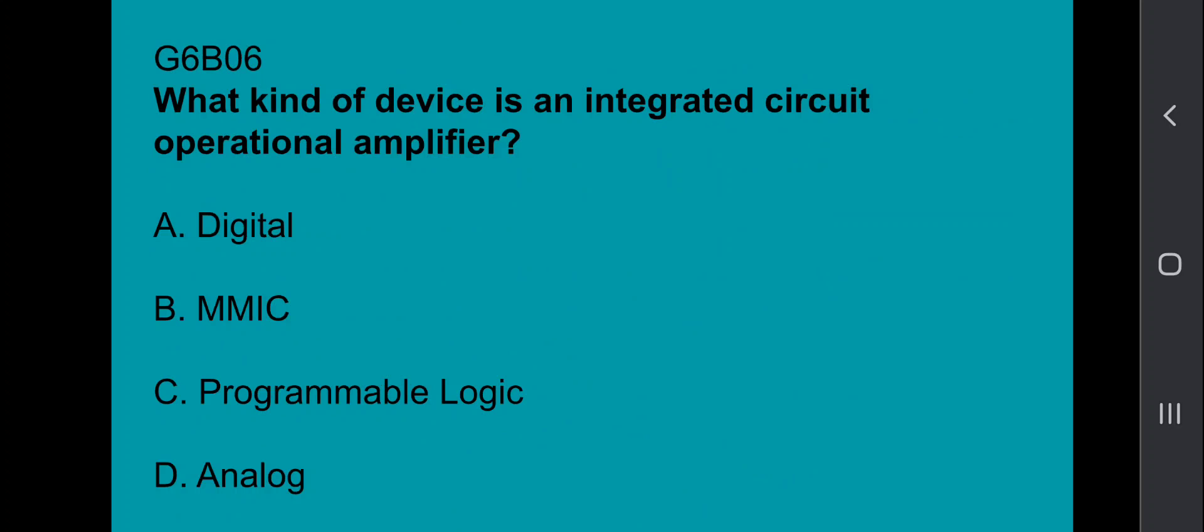G6B06: What kind of device is an integrated circuit operational amplifier? That's going to be analog.